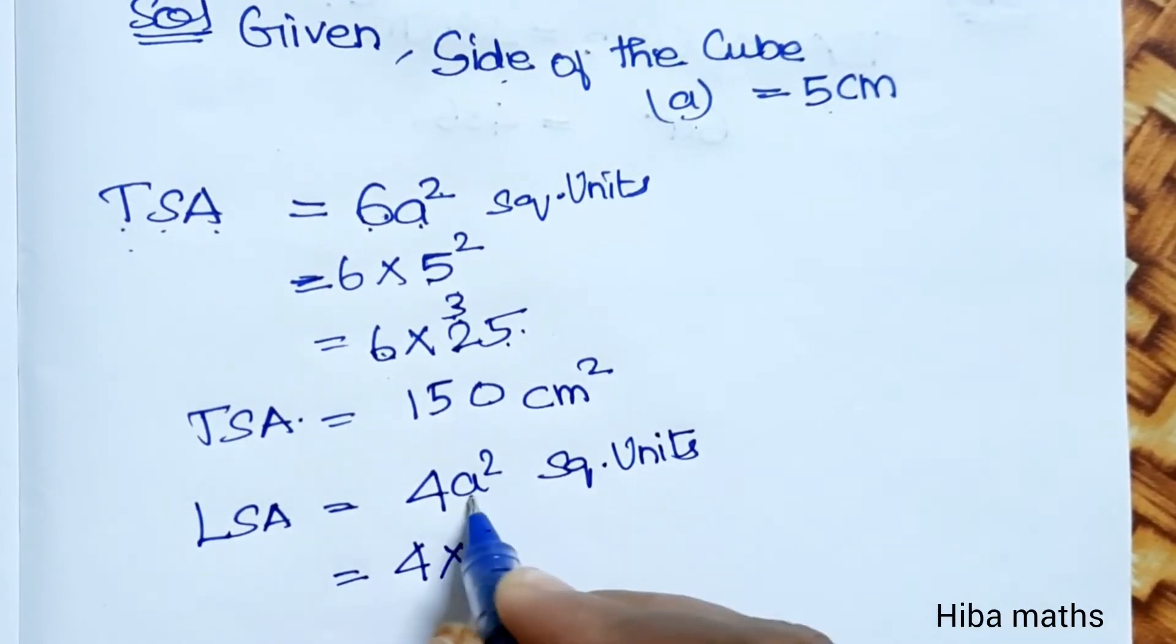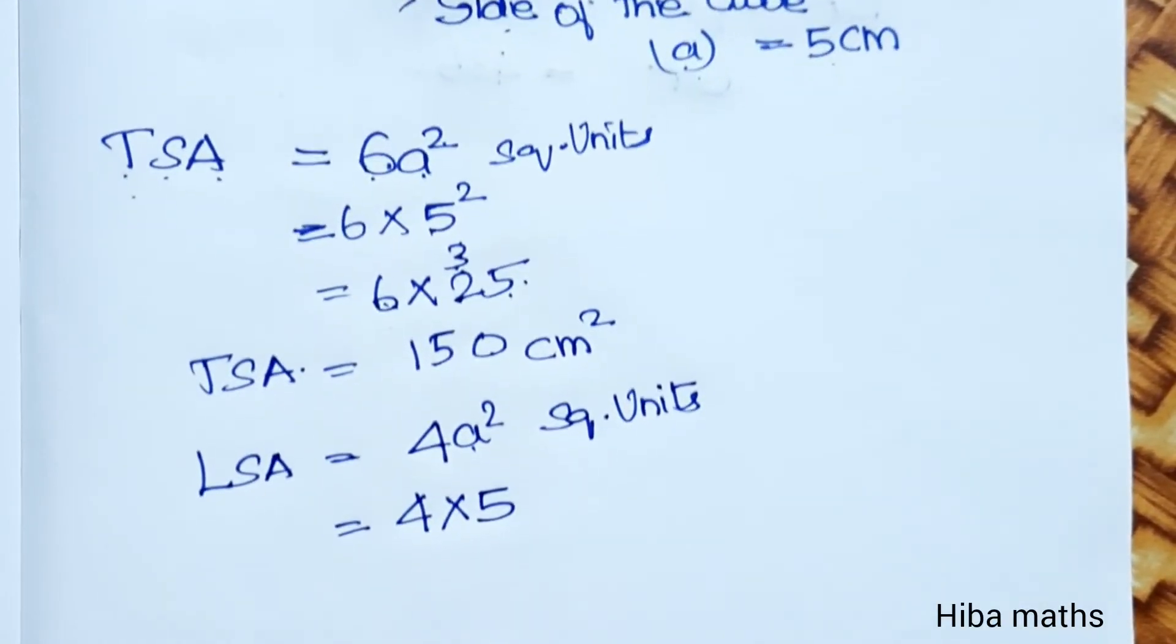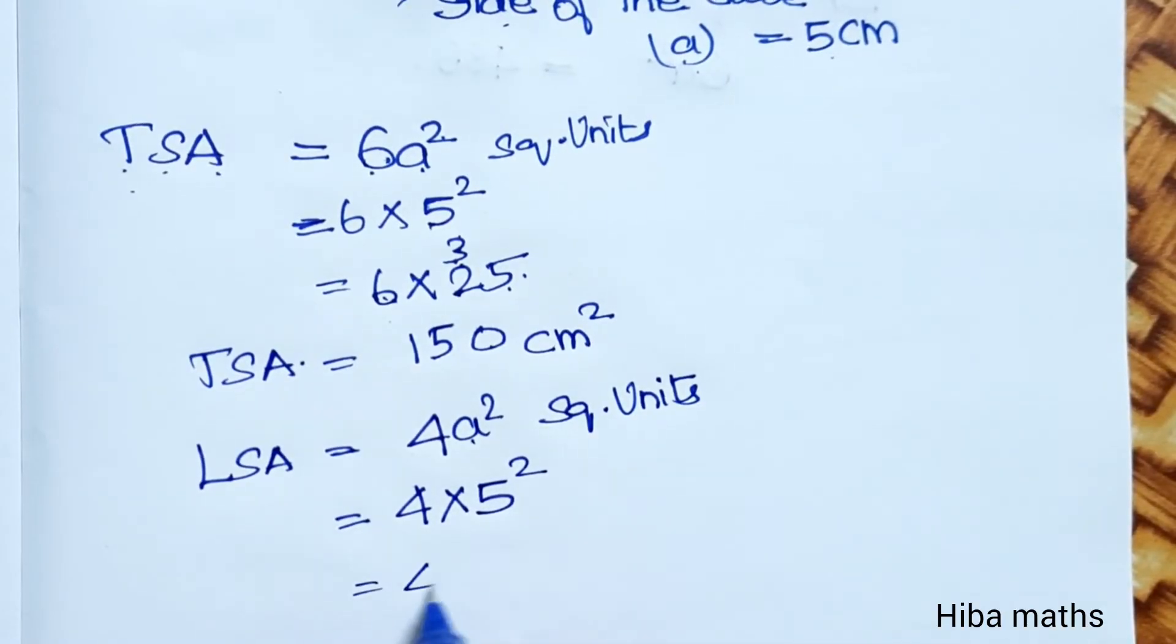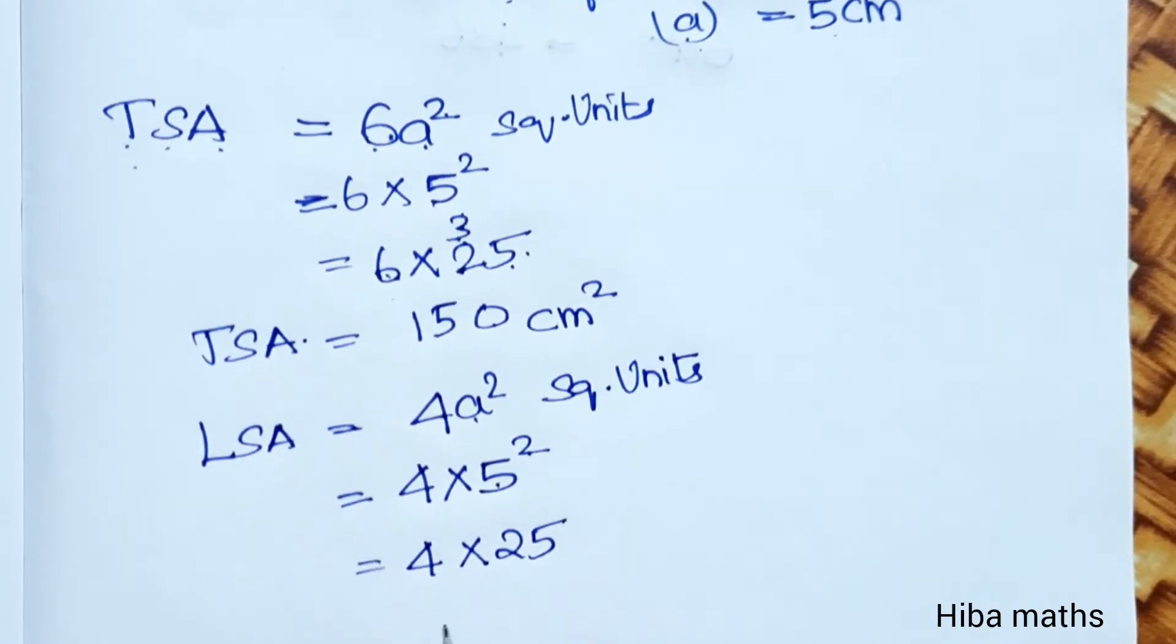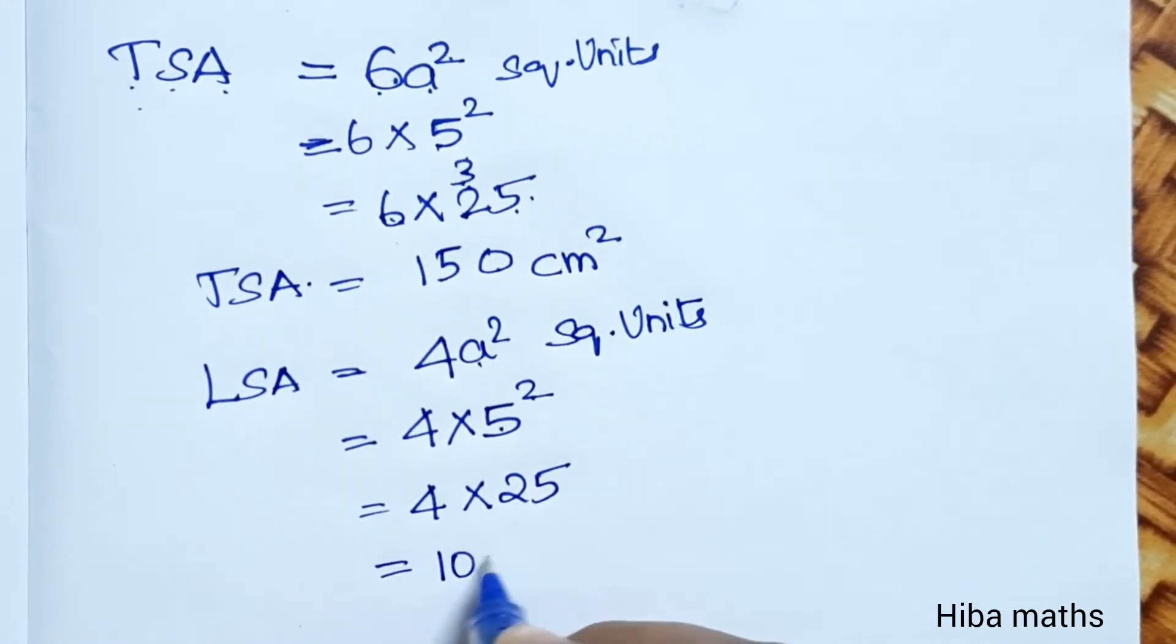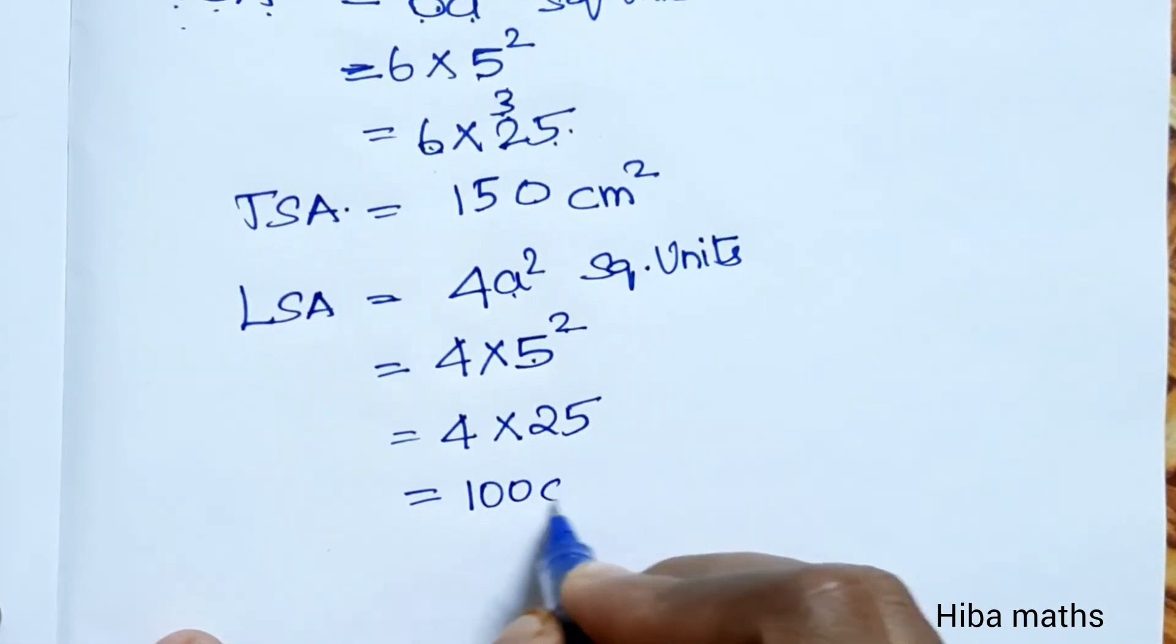Lateral surface area LSA = 4a² square units. LSA = 4 × 5² = 4 × 25. That is equal to 100 cm².